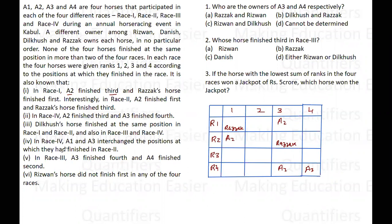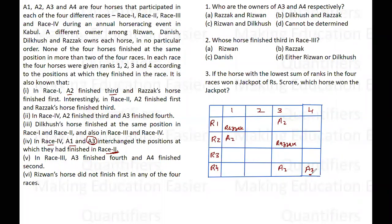Next, it says in race 4, a1 and a3 interchanged their positions compared to race 2. This means the position a1 had in race 4 was the position a3 had in race 2, and vice versa. Since a3 is fourth in race 4, a1 must be fourth in race 2 — only then can they have interchanged their positions.